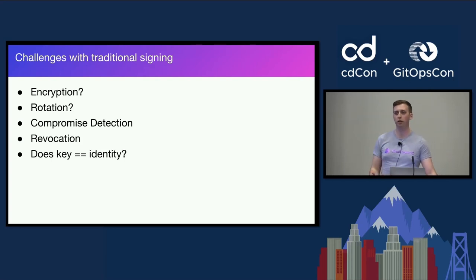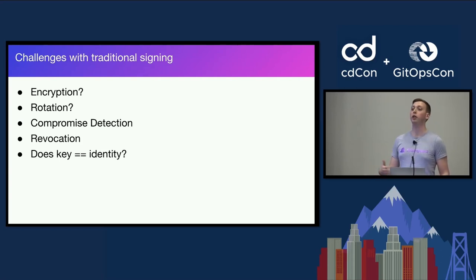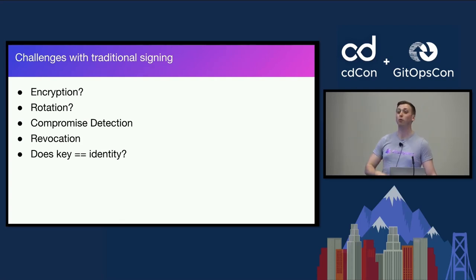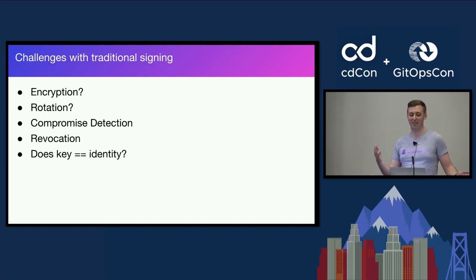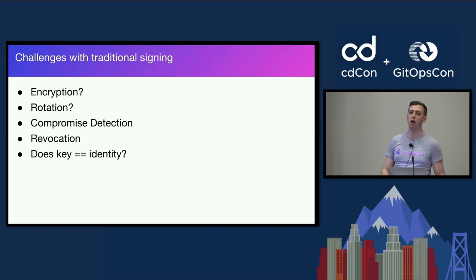However, there are a lot of challenges with commit signing. Are you encrypting your keys? When you generated it, did you just hit enter and move on? Are you rotating your keys frequently — ideally every couple of months? If a key is out in the wild, how would you know or detect this? If you need to revoke a key, what's that process? How do you notify your downstream clients to no longer trust that key?